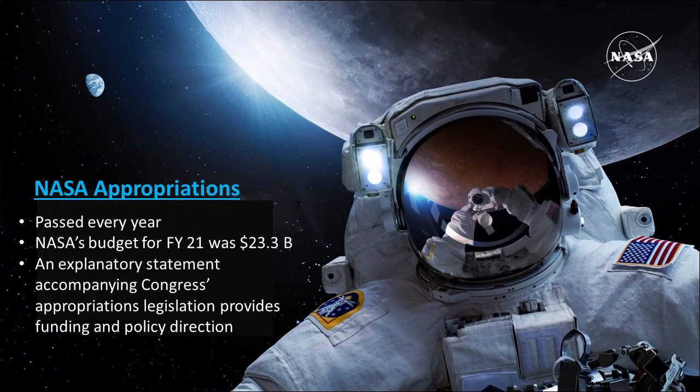In contrast to authorizations, NASA appropriations are passed every year. NASA's budget for FY21 was $23.3 billion. The appropriations include an explanatory statement accompanying Congress's appropriation legislation, which provides funding and policy direction. The authorizations give that policy direction and the appropriations provide the funding. Our appropriators and authorizers work very closely on the Hill with NASA to provide direction and guide funding and programs for the year and years ahead.